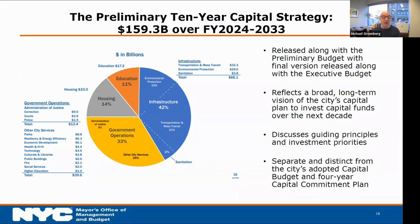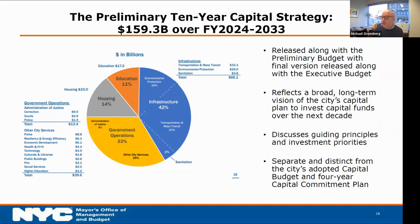The 10-year capital strategy gives you an interesting take on what we're financing and what we're looking to do over a long period of time. A good portion goes to infrastructure and government operations. Most of our funding — around 70-75% — goes to maintaining and improving existing assets, what we call state of good repair. The rest goes to funding new schools, gyms, and other new assets. All of this is reflected in our 10-year capital strategy document and is available on our open data portal.